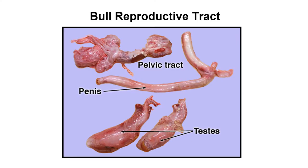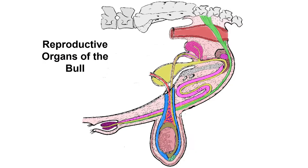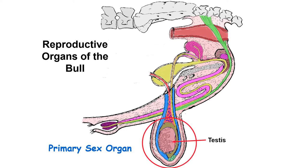This is the bull reproductive tract, showing its three major parts: the testes, the pelvic tract, and the penis. The scrotum in this specimen is removed. At the top part we have the pelvic portion of the tract, where the sperm will move out. When ejaculated, the sperm then moves into the penis. The testes is located at the bottom and is considered to be the primary sex organ of the male. Its main function is to produce both the sperm and the male sex hormone, testosterone.